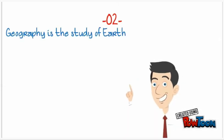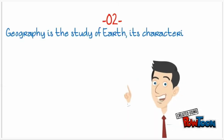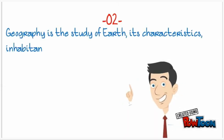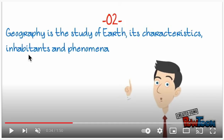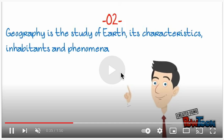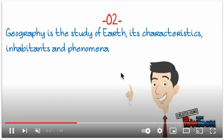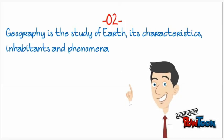Geography is the study of earth, its characteristics, its inhabitants — the people that inhabit or live here — and its phenomena, meaning what is going on in our earth. That is what geography means: the study of earth.